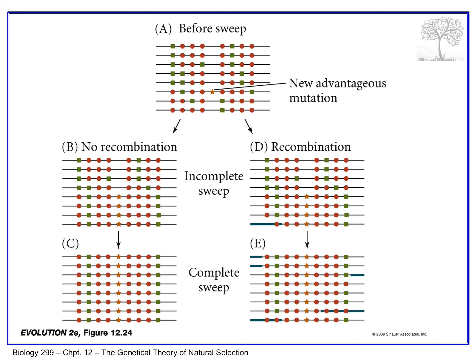A selective sweep causes reduced sequence variability and greater linkage disequilibrium near the mutated site, and that creates a signature of positive selection.